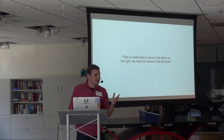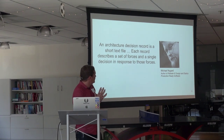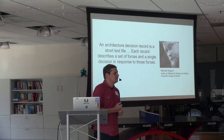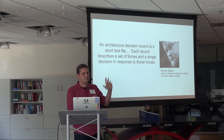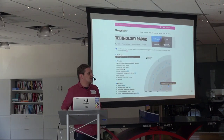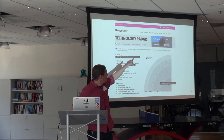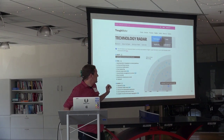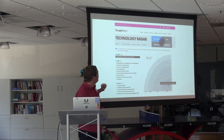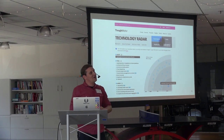An architecture decision record is a short text file. Each record describes a set of forces and a single decision in response to those forces. This is Michael Nygaard, author of Release It, and one of the big figures in evolutionary architecture. Some other people think this is a good idea too — the most recent ThoughtWorks technology radar. In their techniques quadrant, lightweight architecture decision records was the only thing to land in the adopt ring. So ThoughtWorks thinks it's a pretty good idea.